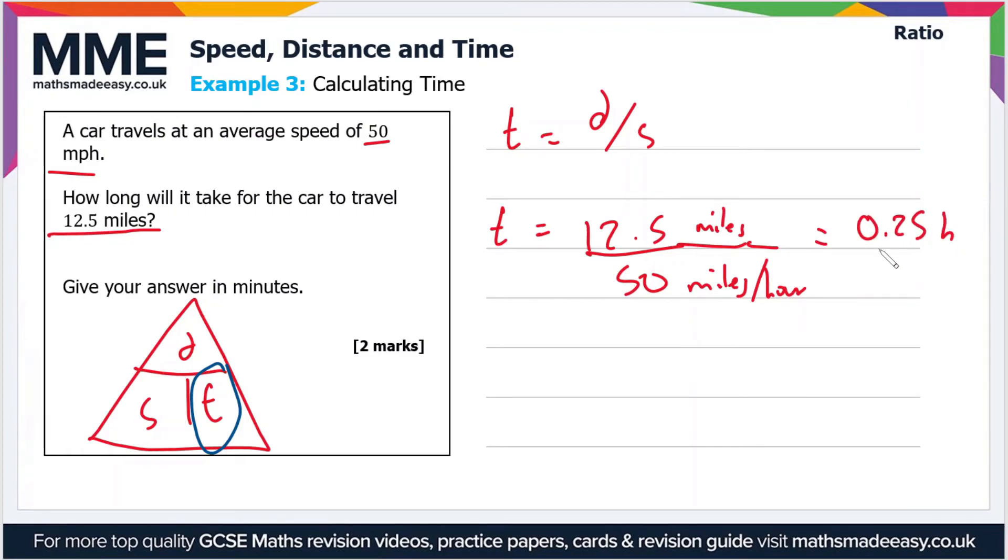Okay, but we're not there yet because the question says give your answer in minutes and we've got an answer in hours. So 0.25 is the decimal equivalent of one quarter. So it's a quarter of an hour. So a quarter of an hour is 15 minutes. So the time is 15 minutes.